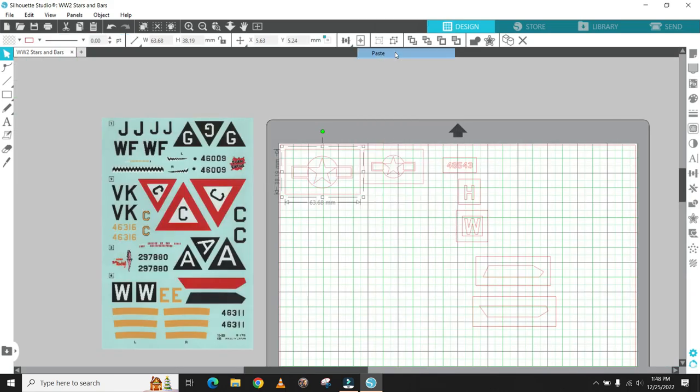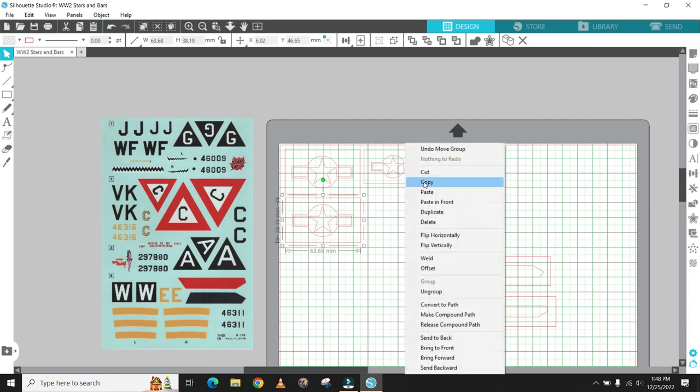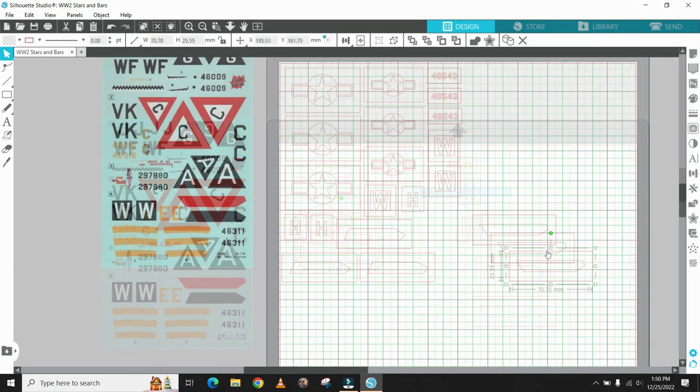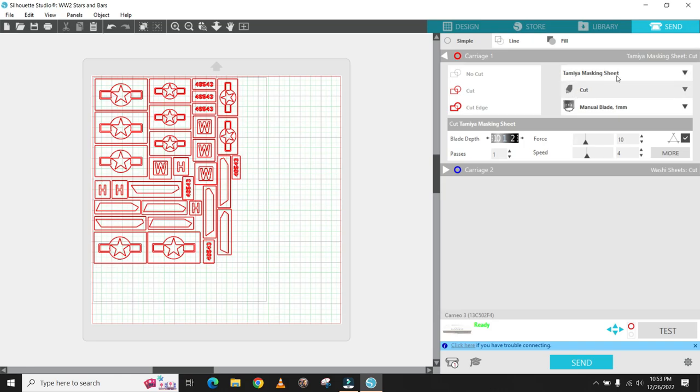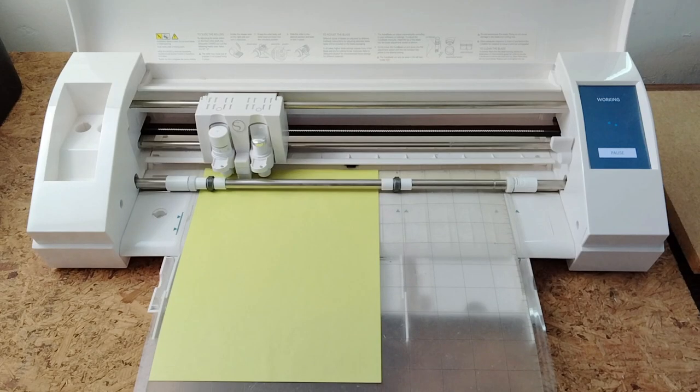With all the artwork created, I make copies more than I will need in case I mess up during application or the cutter damages the masks while cutting as can happen depending on the artwork and masking medium from time to time. With everything laid out, it's time to load the cutter with the masking sheet and get cutting.